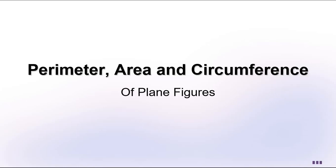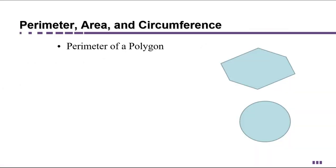Hi, I'm Ms. Hearn. Let's get started. In this video, we're going to talk about perimeter, area, and circumference of plane figures. Polygons and circles are examples of plane figures. Polygons have straight edges, whereas circles are round.